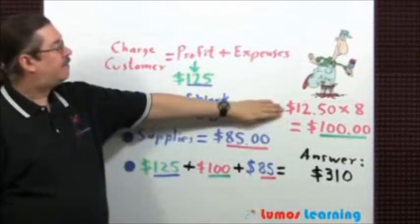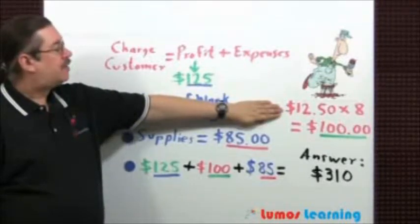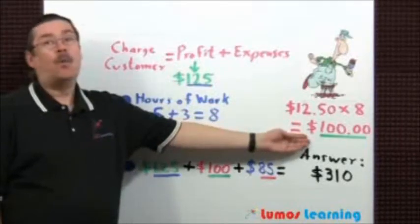Knowing this, we can figure out that the helper will earn the following: he gets paid $12.50 per hour times 8 hours, which equals $100.